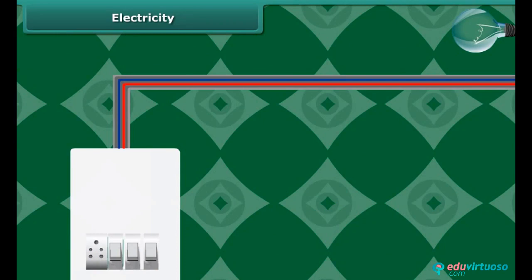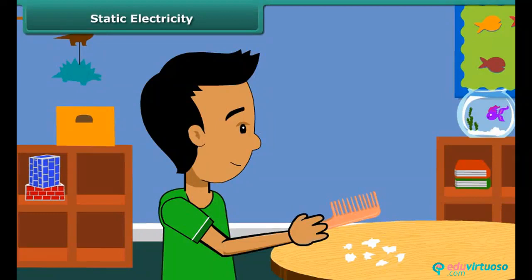When we comb our hair with a plastic comb and take it near small pieces of paper, the paper pieces are attracted toward the comb. We then say that the comb is charged with electricity.